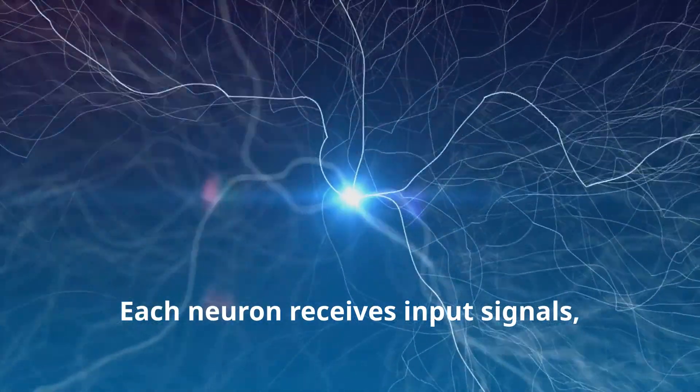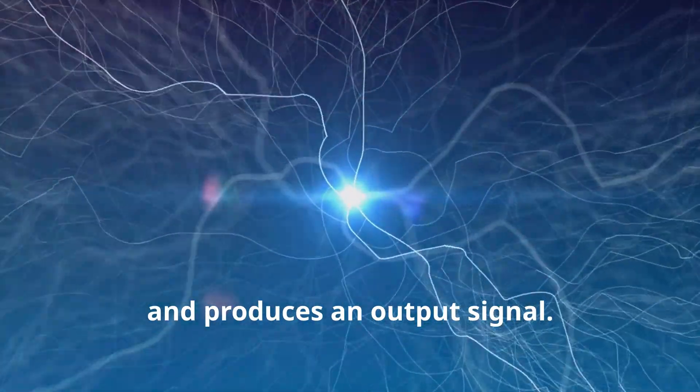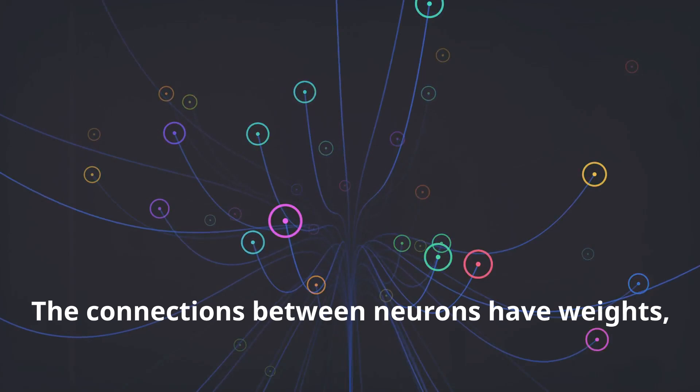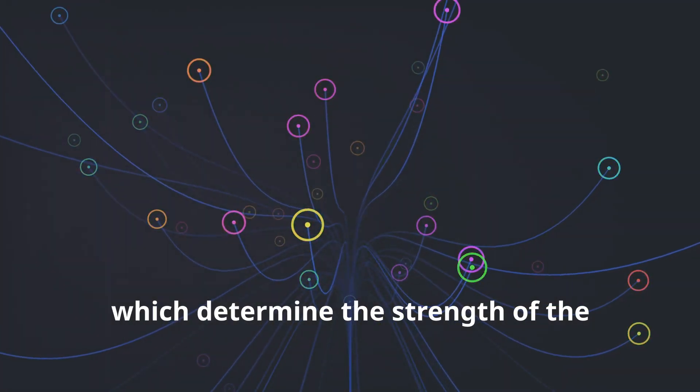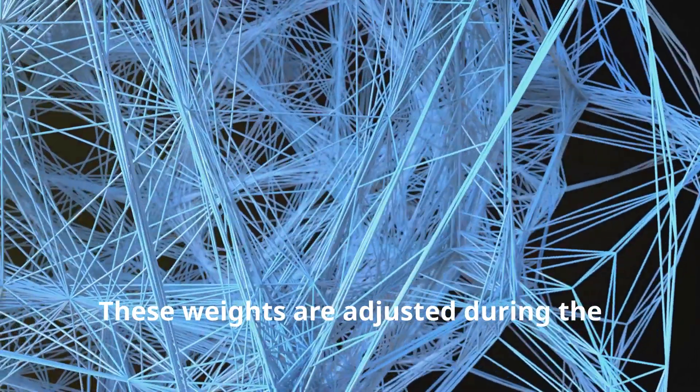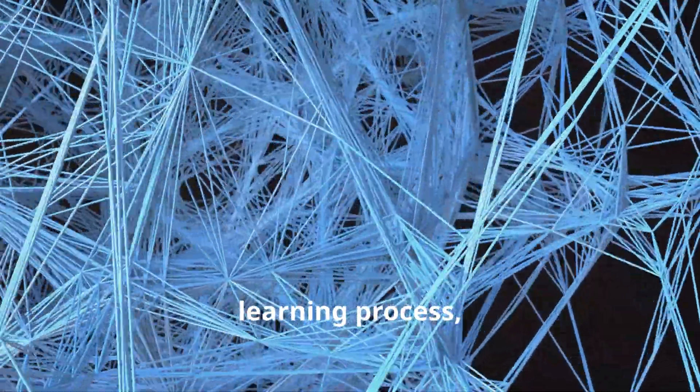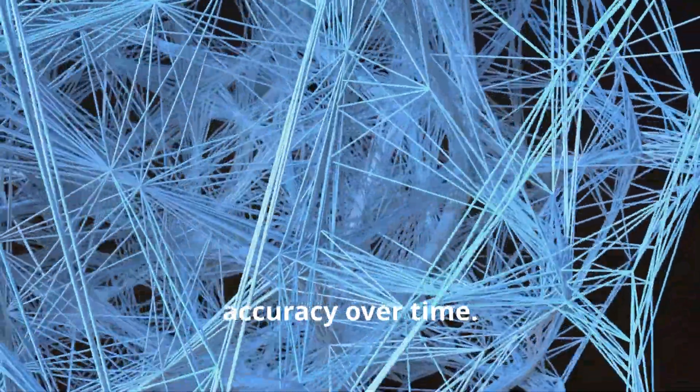Each neuron receives input signals, processes them, and produces an output signal. The connections between neurons have weights which determine the strength of the signal transmission. These weights are adjusted during the learning process, allowing the network to improve its accuracy over time.